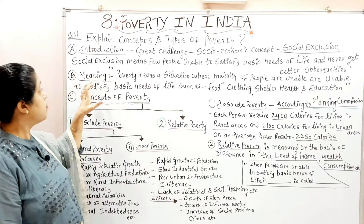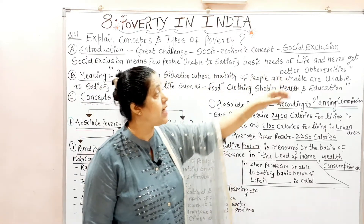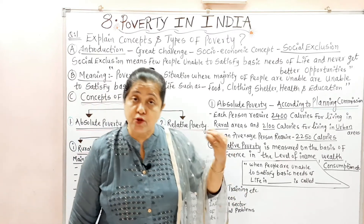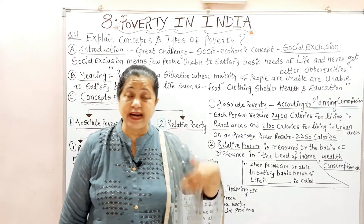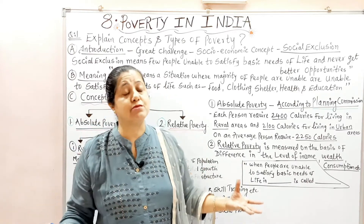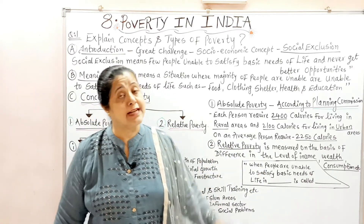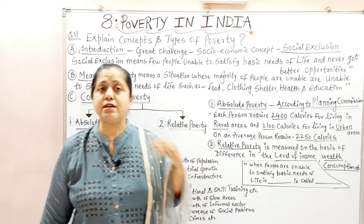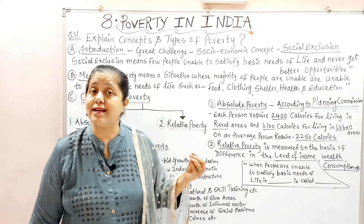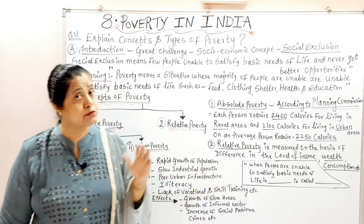Social exclusion means a few people are unable to satisfy basic needs of life and they never get better opportunities in their life. In backward rural areas, good hospitals are not there, good medical stores are not there, good school facilities are not there, good shelter facilities are not available. Because of this poor infrastructure, they are not getting better-paid jobs. Few people who didn't get better opportunities — that is called social exclusion.